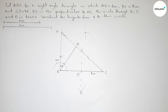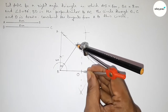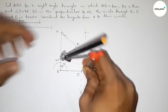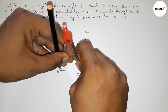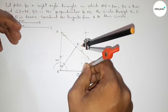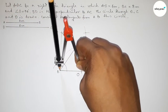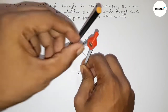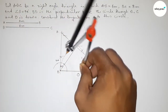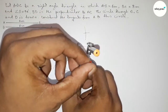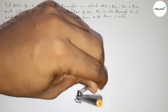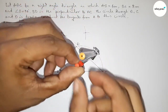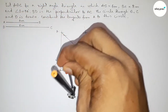Taking the length OB and OD, we now draw a circle through points D, B, and C.